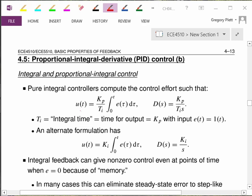But first, let's look at the integral action by itself. A pure integral controller computes control effort such that U of T, the control effort going into the plant, is equal to a constant times the error signal integrated from zero up until time now. So it's a running integral of all of the error that has happened from when I turned the system on until right now.